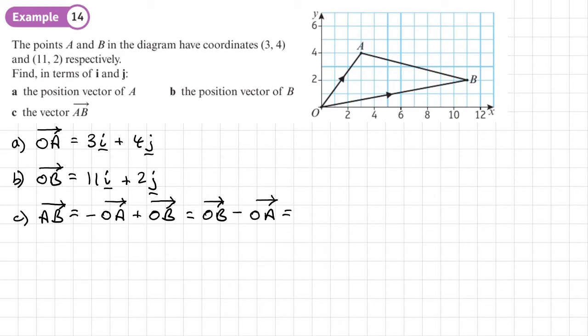OB is 11I plus 2J. And then we're subtracting A, which is 3I plus 4J. And then that will become 11 minus 3, which is 8I. And then 2 minus 4, which is minus 2J.